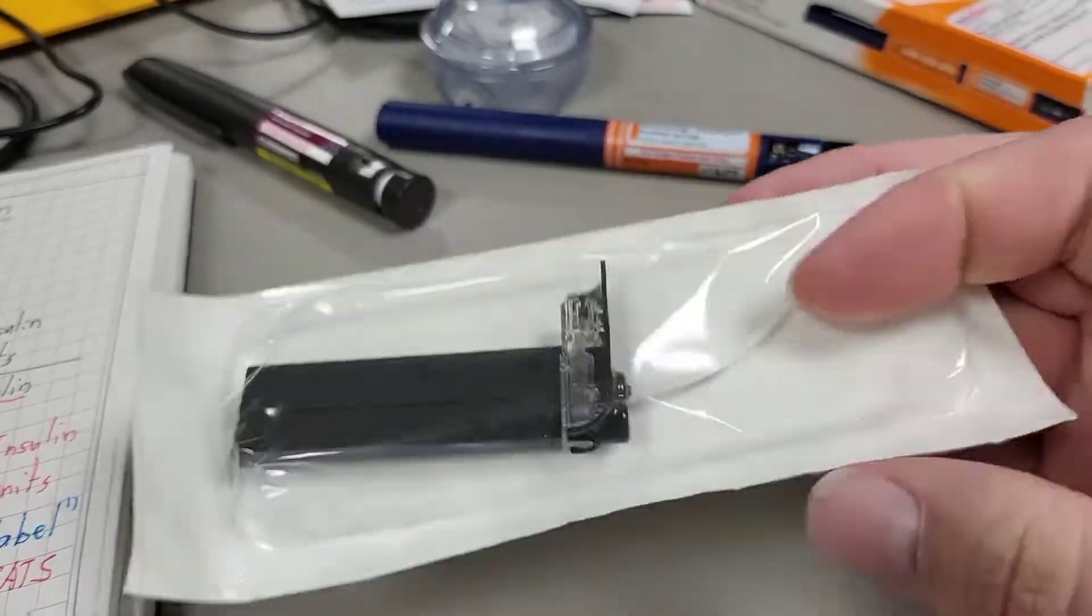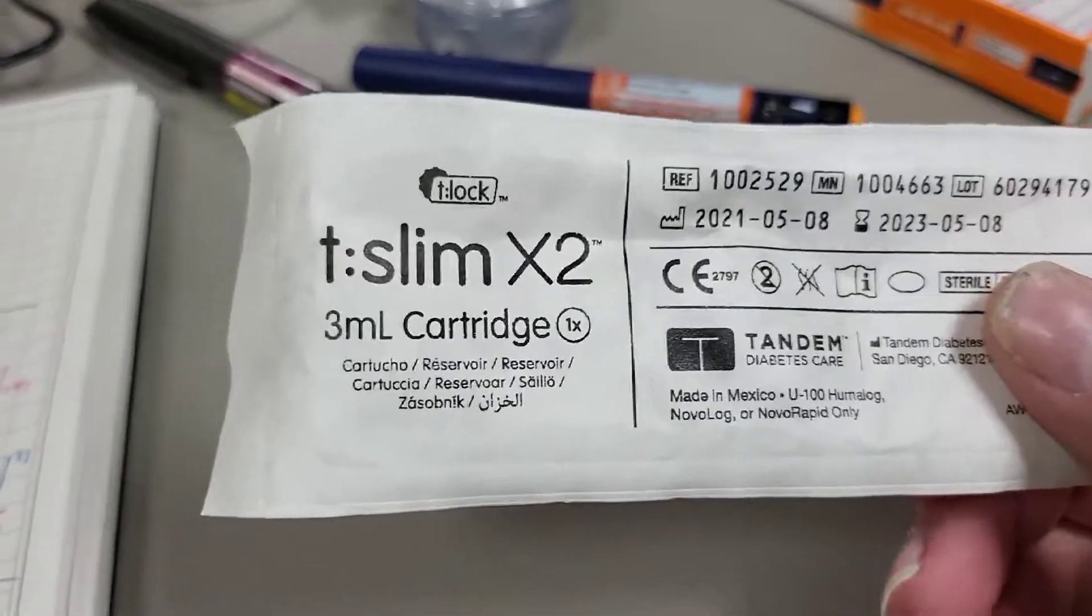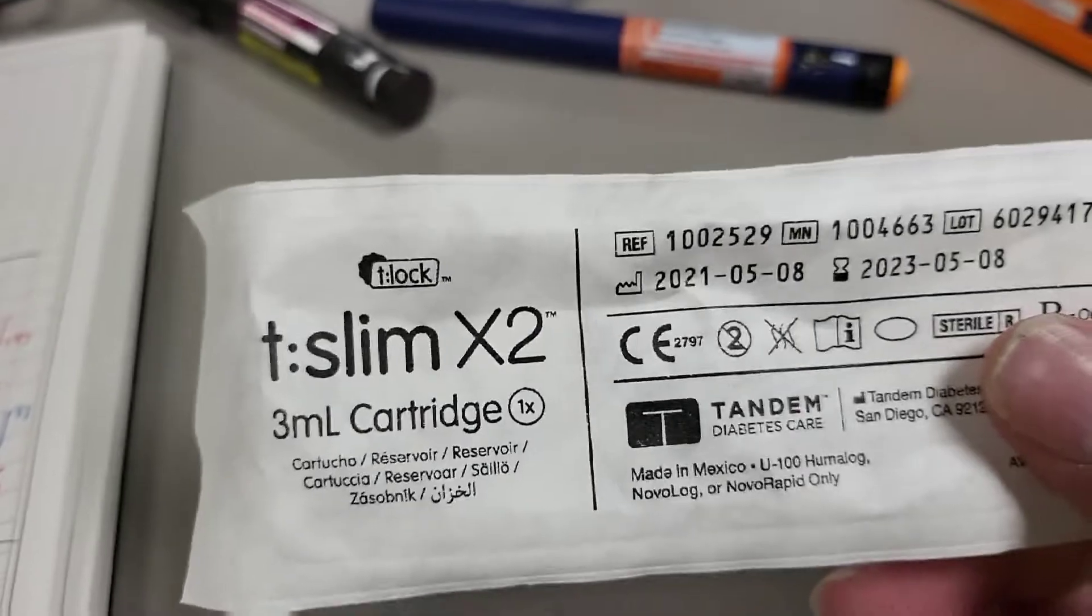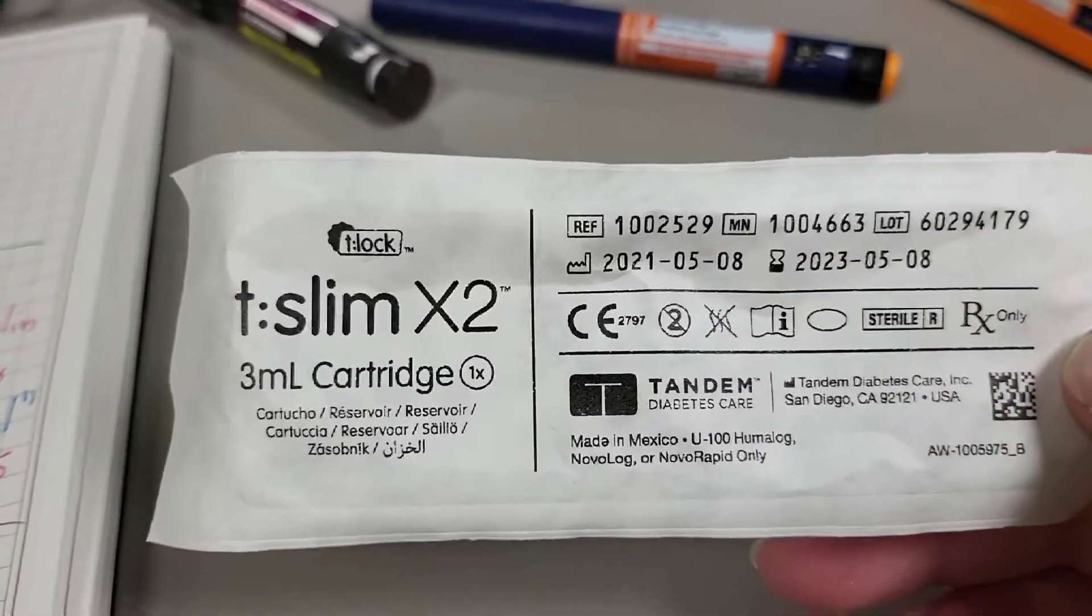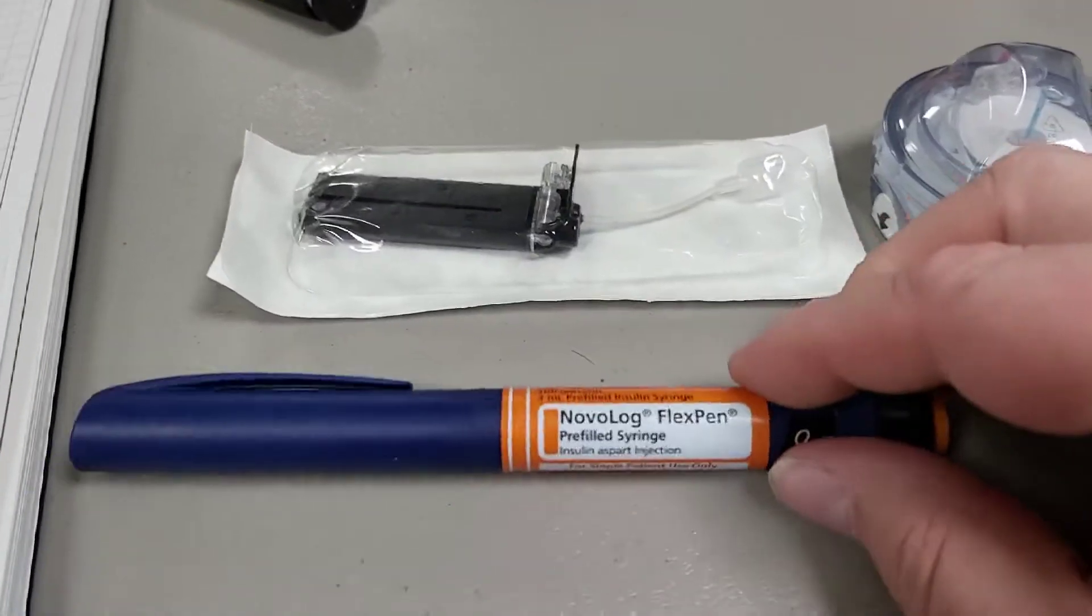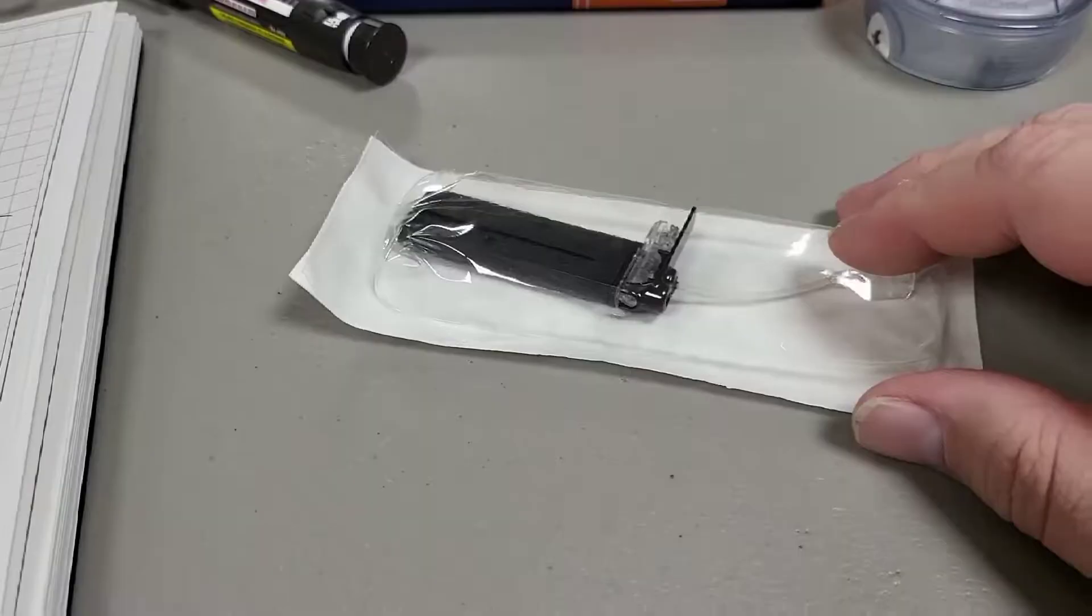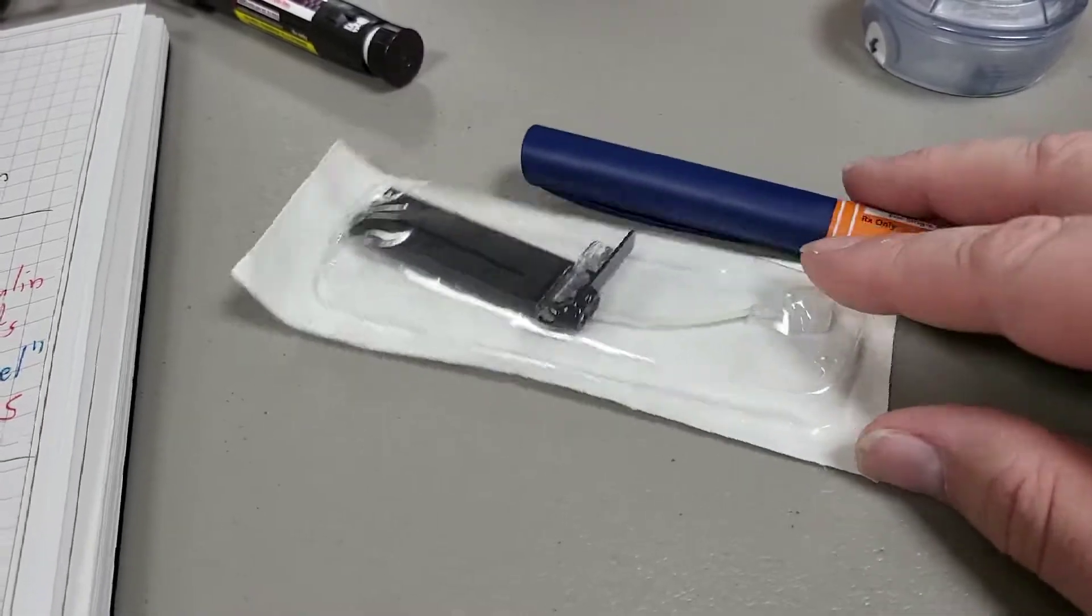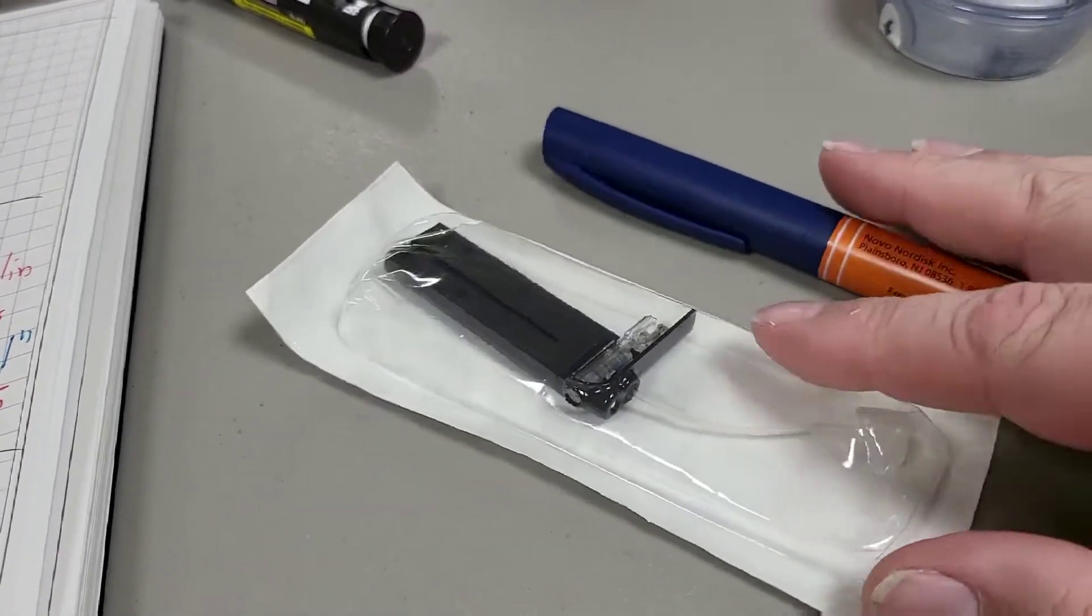It is a cartridge for an insulin pump. Notice it contains three milliliters per cartridge. That matches the quantity in the pen. If I were to fill this cartridge with this pen, I would be having to change my cartridges every one and a half days.